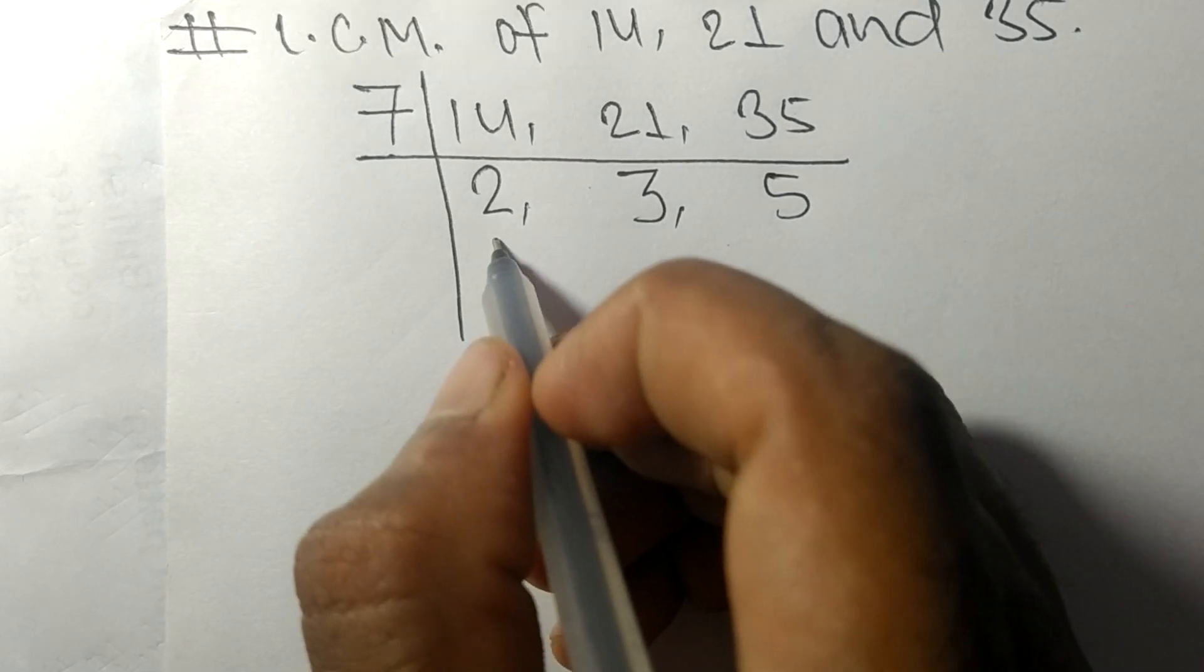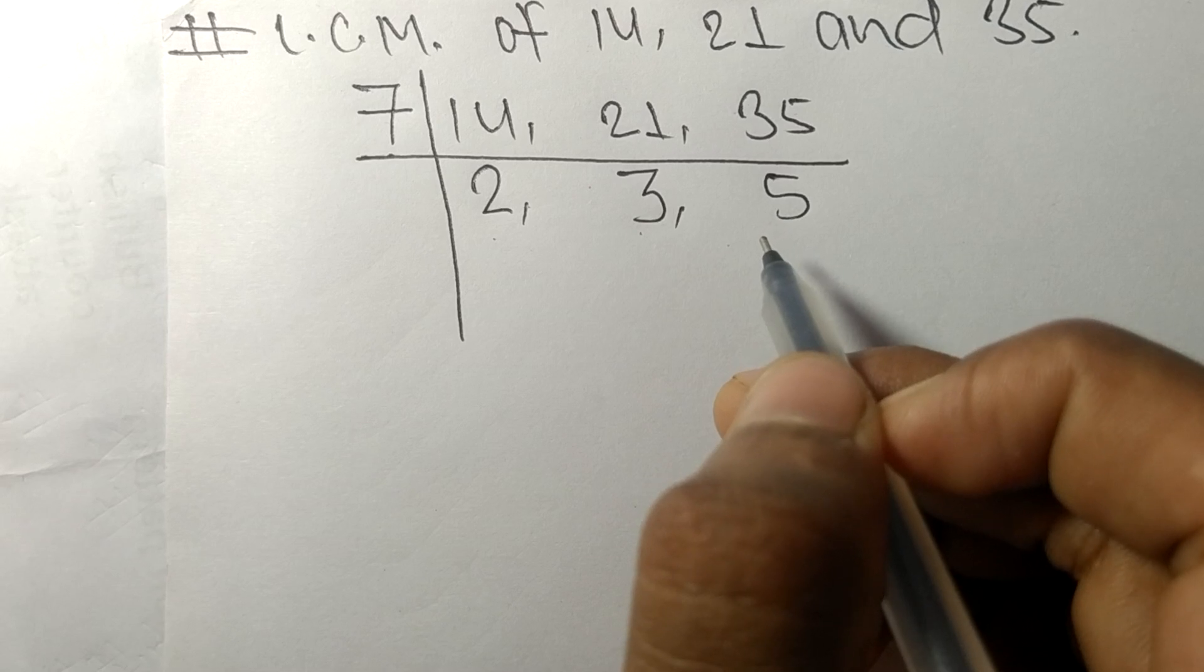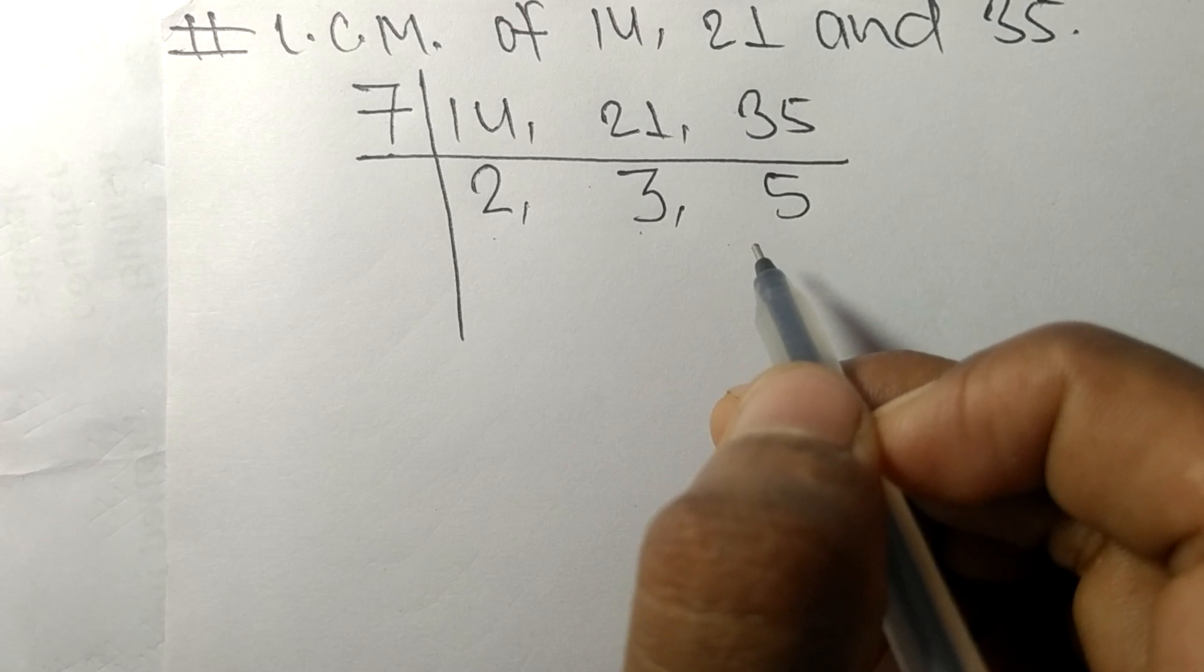So now we got 2, 3 and 5 which are not exactly divisible by the same number.